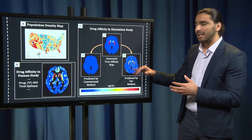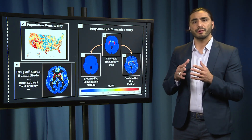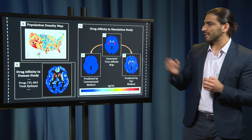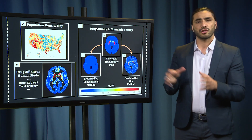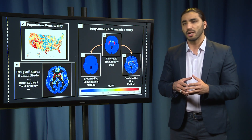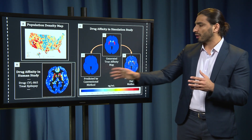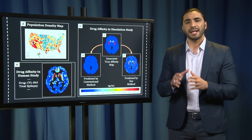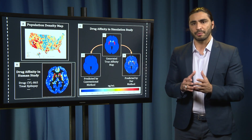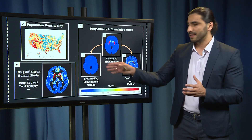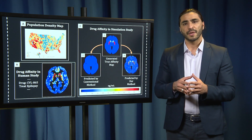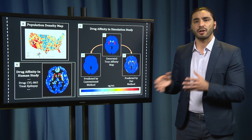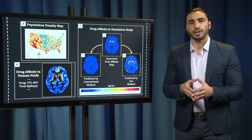Using our methods, shown in C3, we were able to accurately detect this region of variation in affinity compared to the conventional method of estimating a single concentration for the whole brain, shown in C2. This shows the accuracy of our methodology.